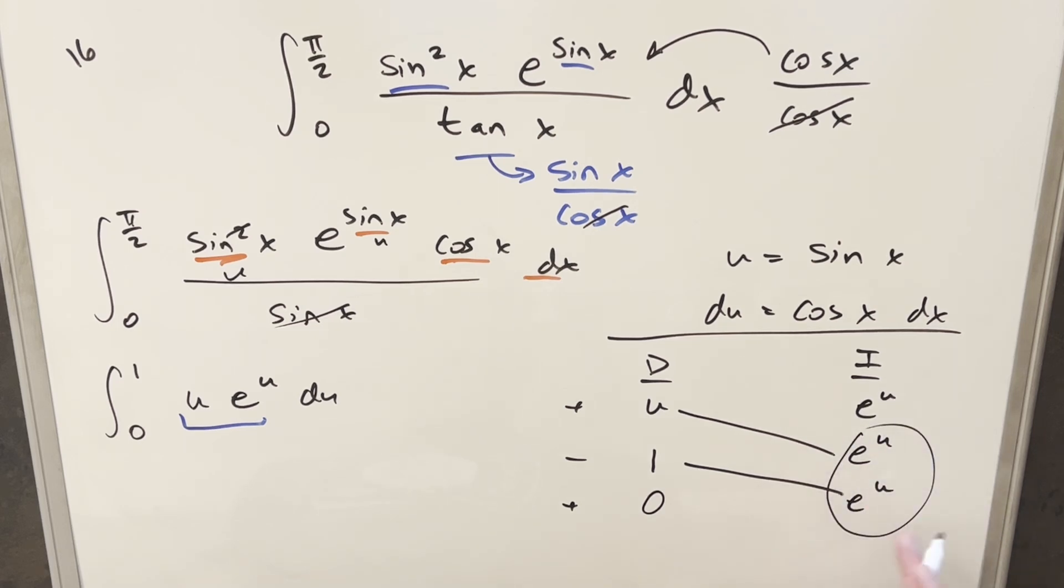What I'm going to do, we have e to the u in common here. So let's factor out an e to the u. So we'll factor that in front. And then here we're going to have just u minus 1. And we just need to evaluate this from 0 to 1.